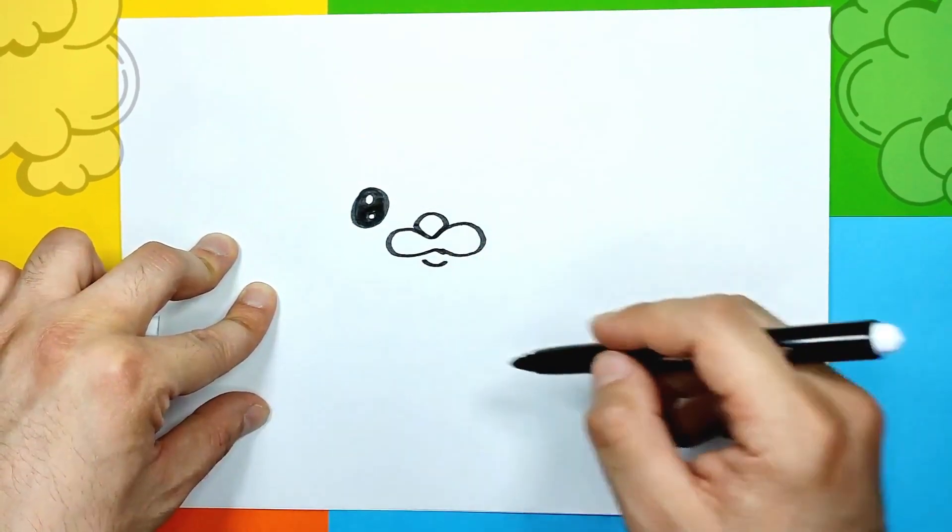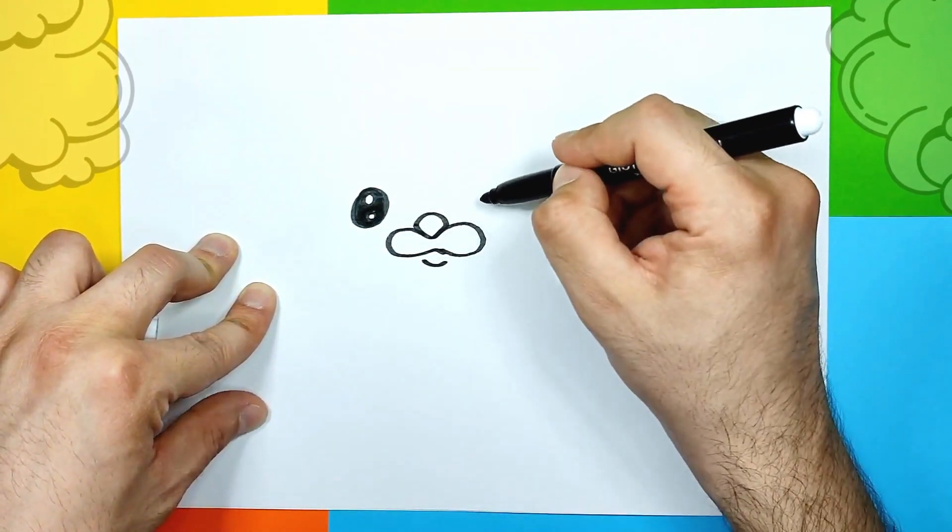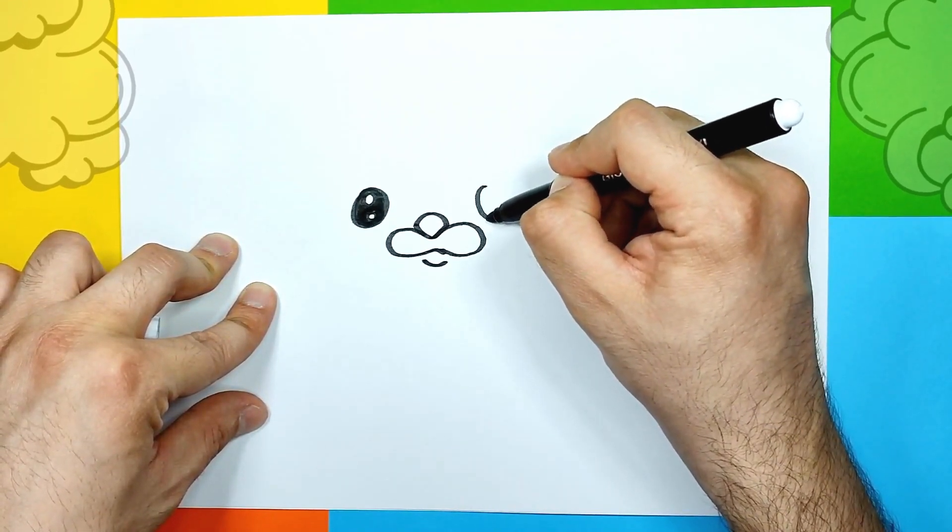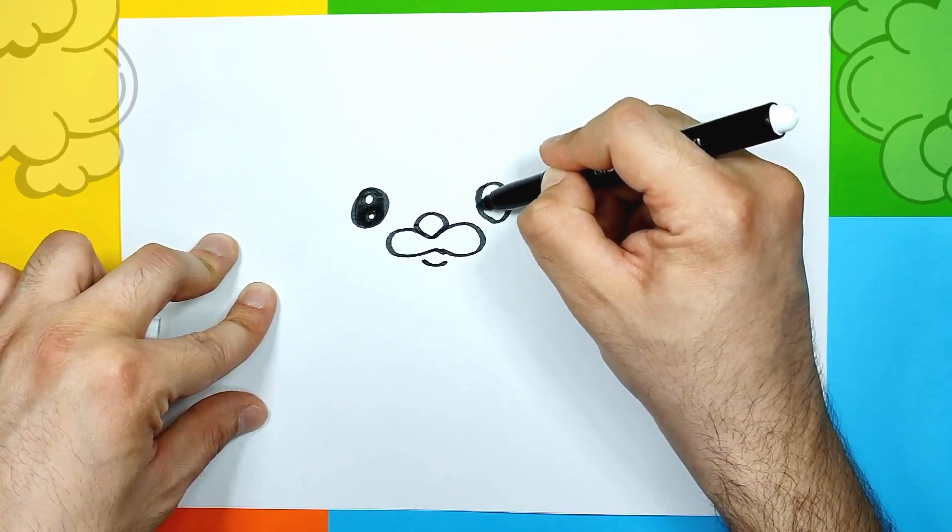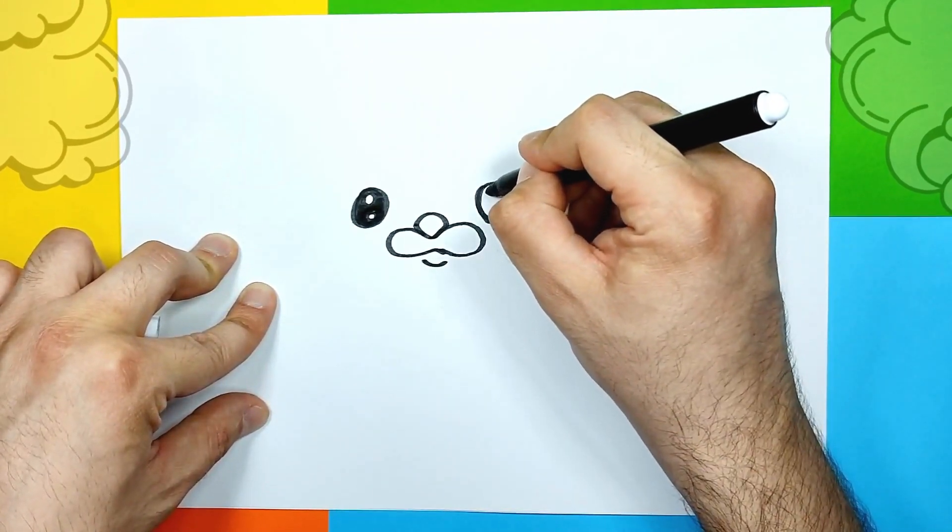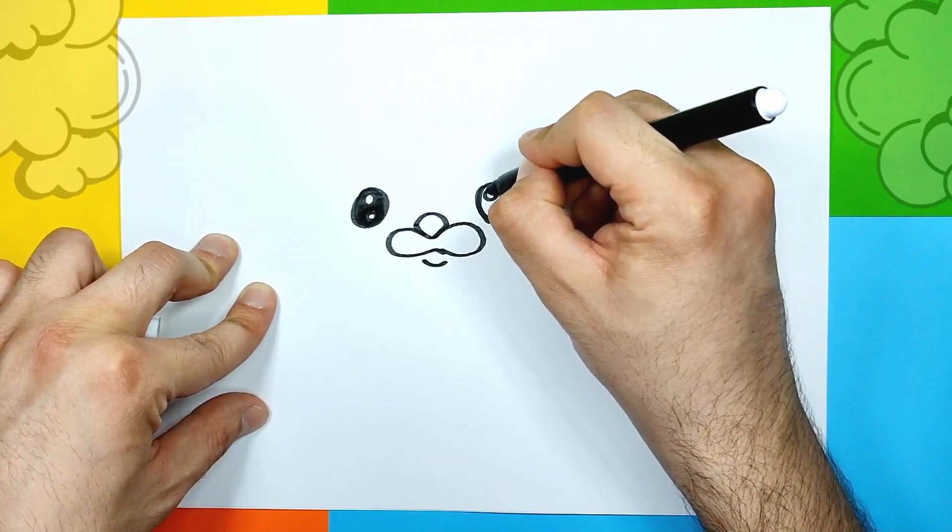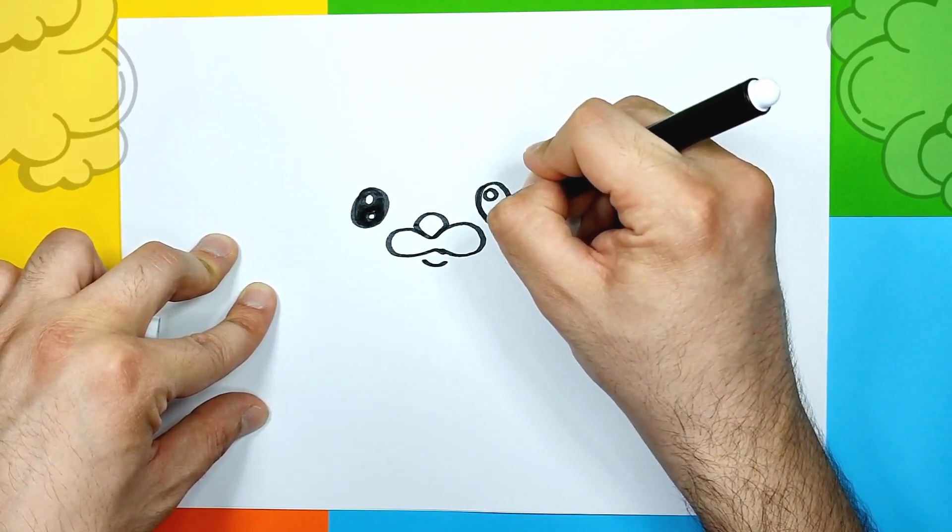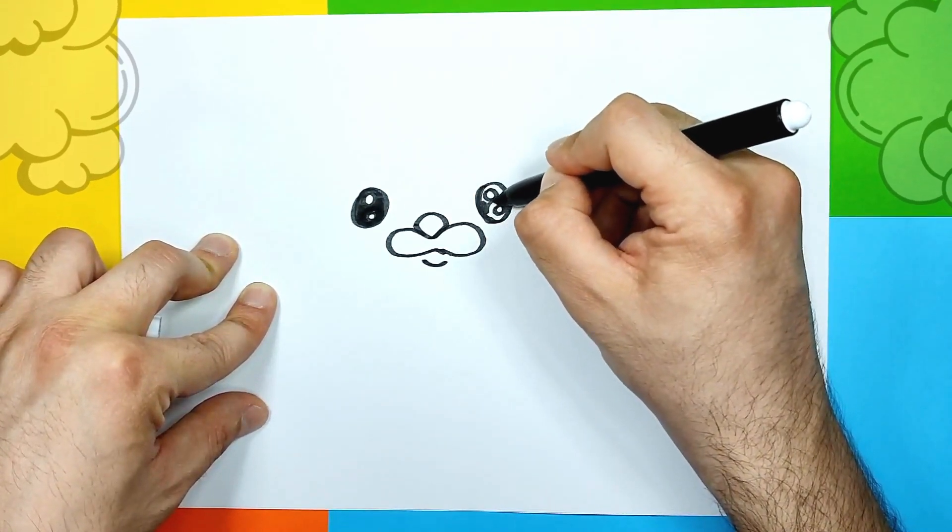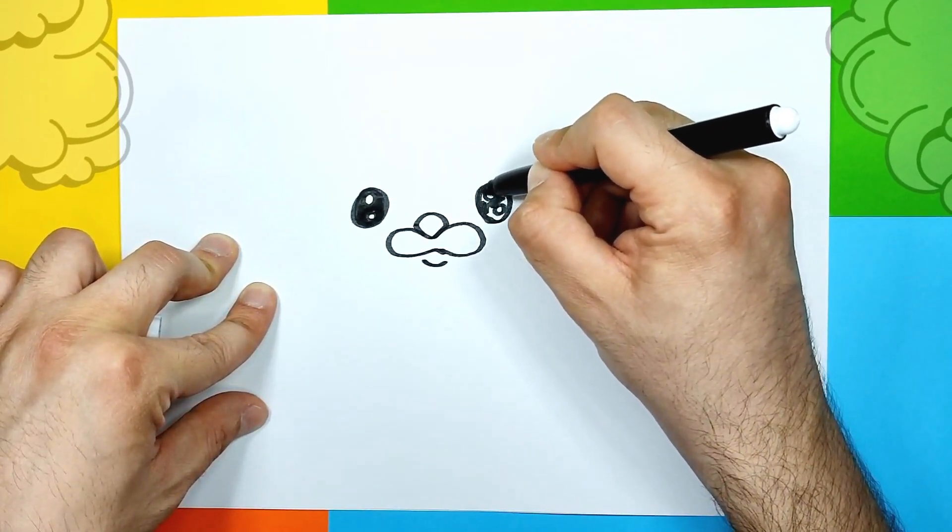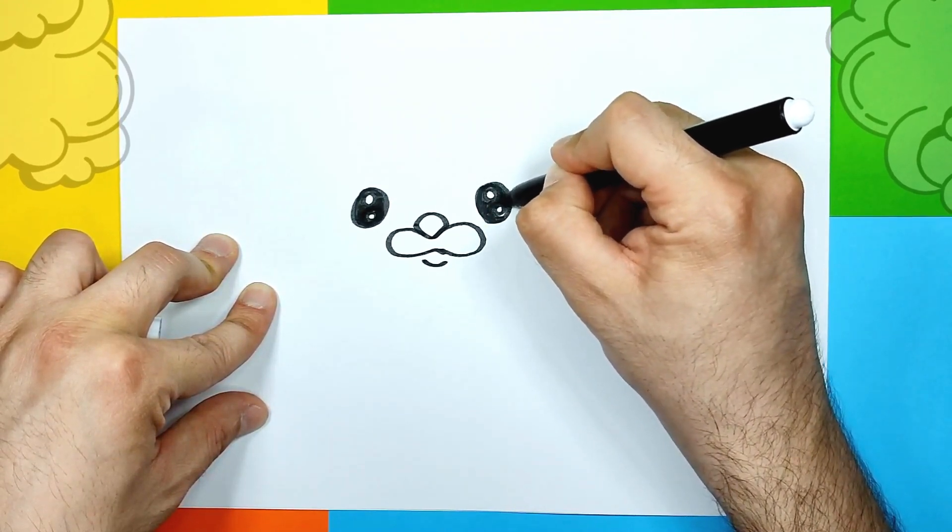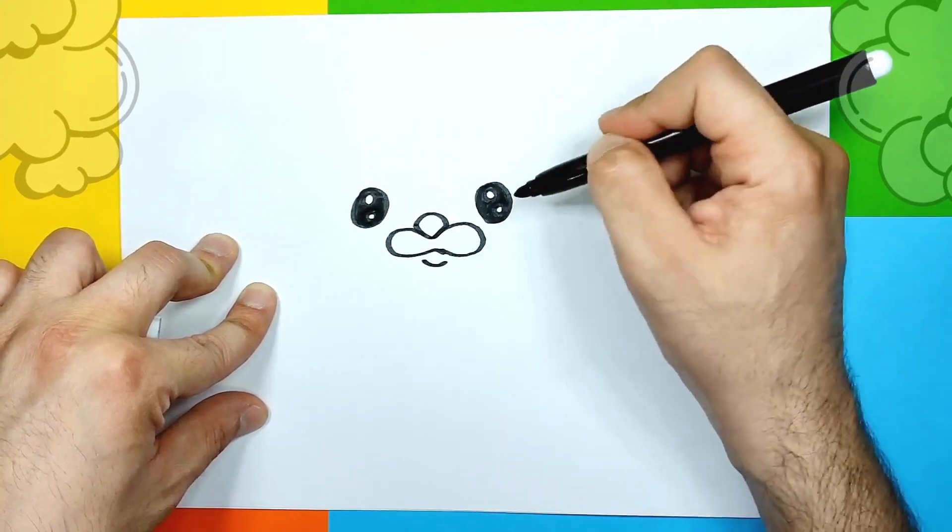Now we're gonna create another one from this side. We're gonna draw that egg shape and then we're gonna create two circles. One is a little bit bigger but you can make them even if you like. And then color in.